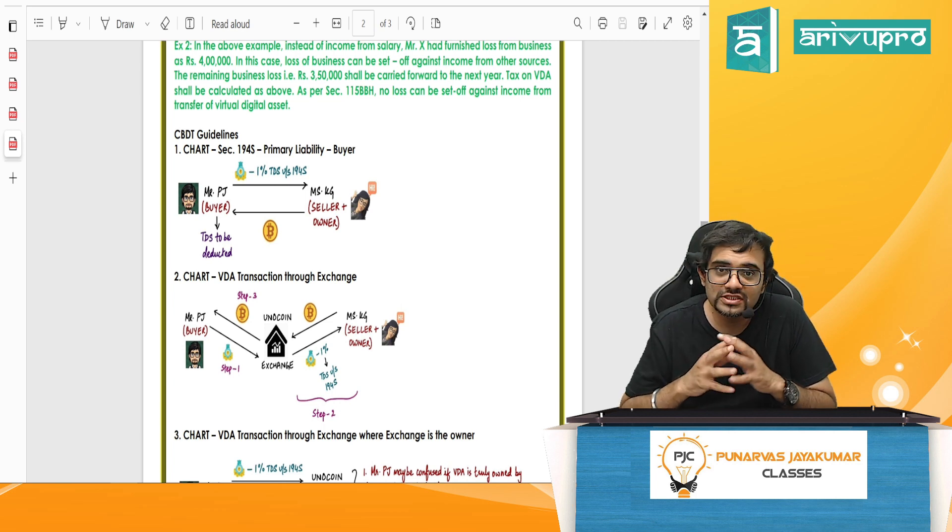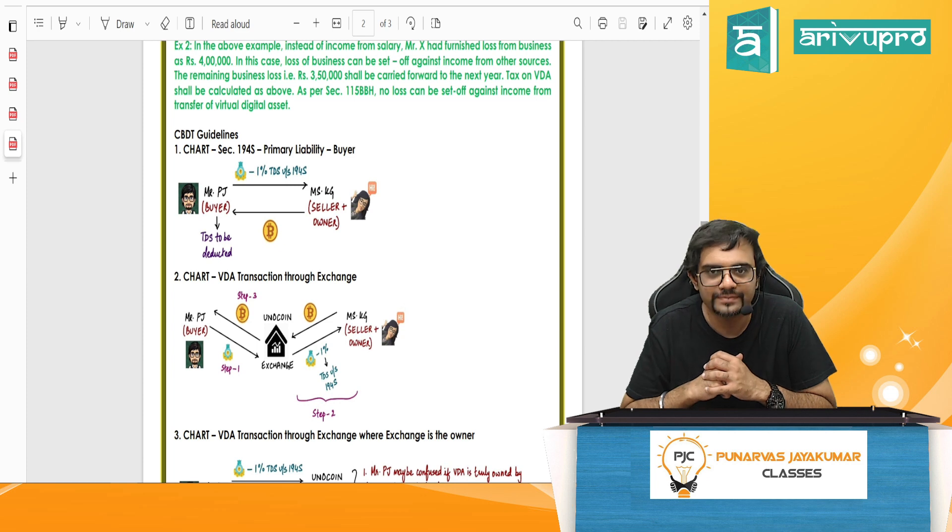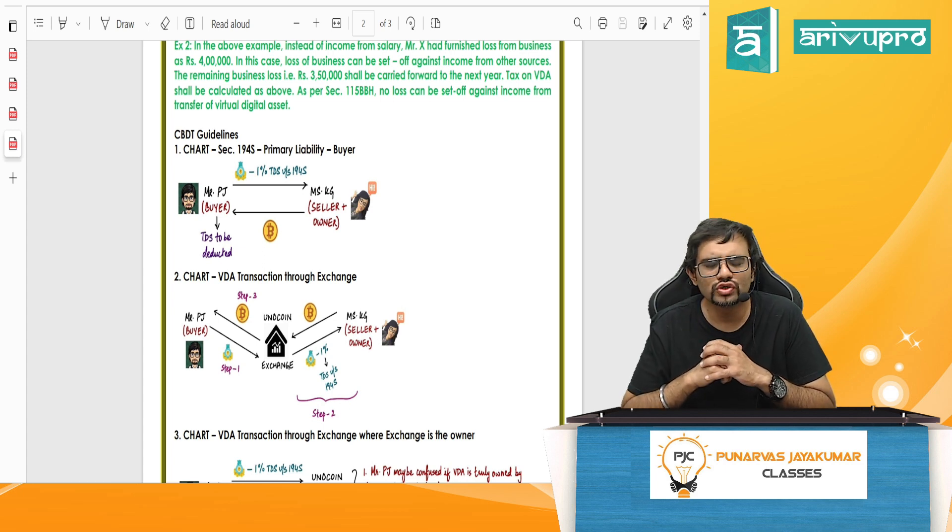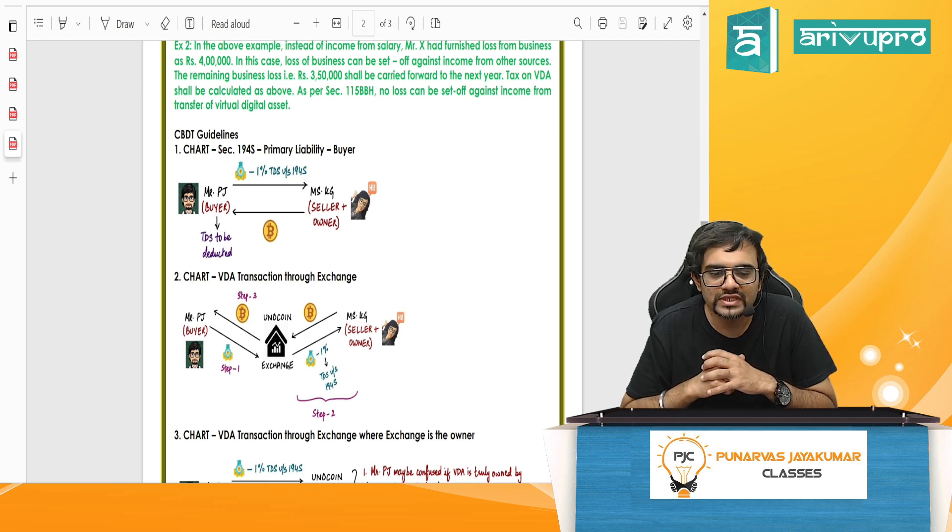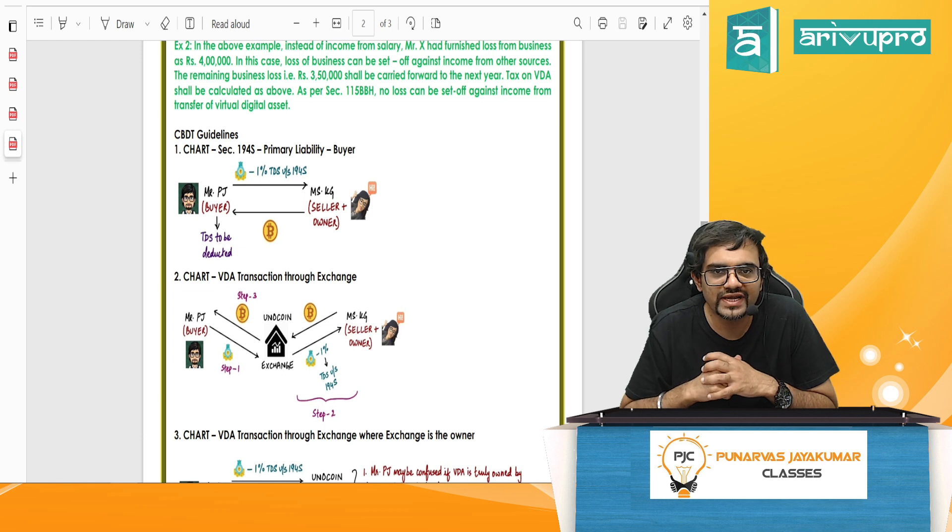So my classes would be hosted on the Arivu Pro platform and all the classes you will get access. And regarding the other technical details, of course, you can contact the team. So as far as the direct tax classes are concerned, it is relevant for CA final and CMA final, my dear friends, for those who are writing in 2023, whichever attempt it is. So the assessment year would be 2022-23. So basically, it would be looking at the Finance Act 22. And everything would be covered in Finance Act 22.